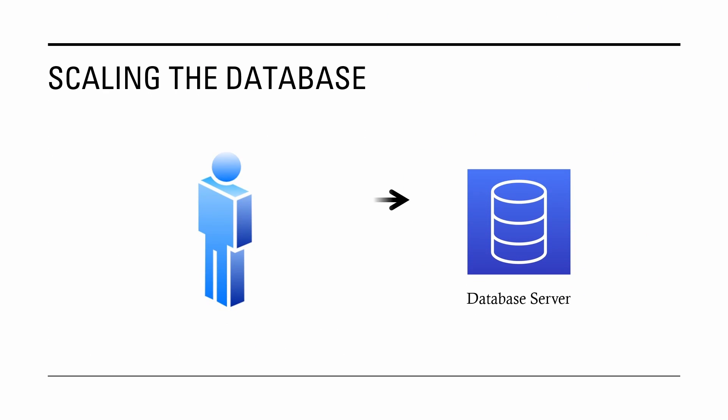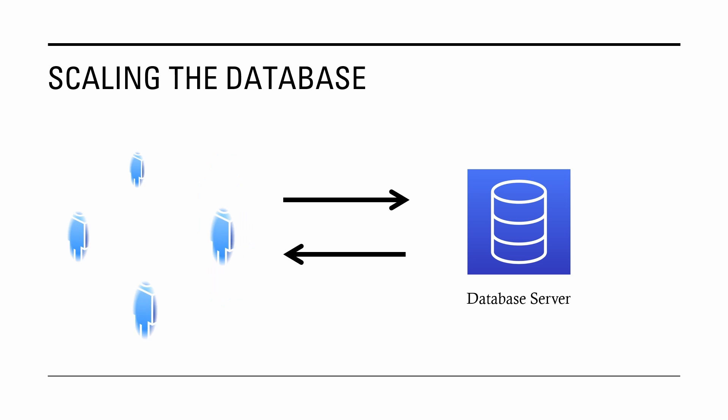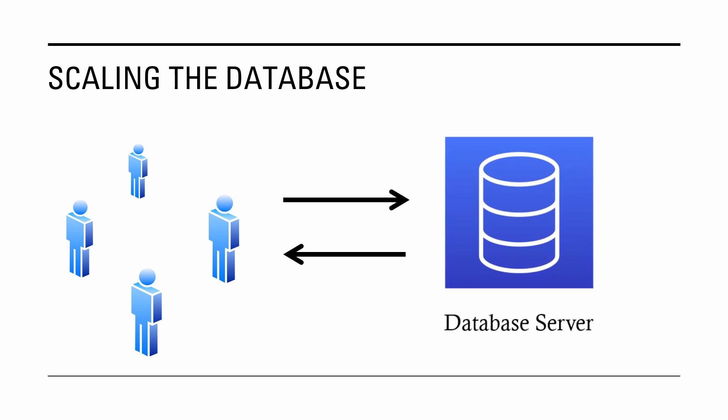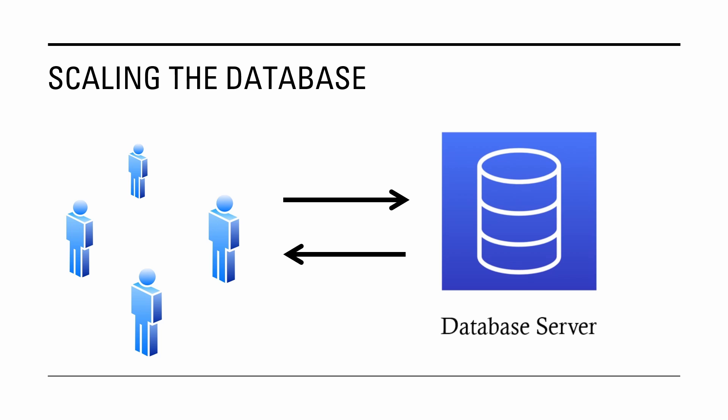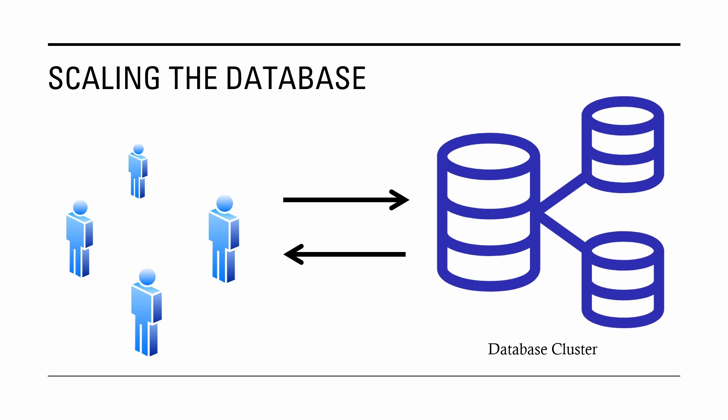At the beginning, Notion used one database server to handle all requests. As the number of users was increasing, Notion's team was applying vertical scaling by increasing the capacity of the virtual server to keep up with the increasing load. Eventually, even the largest available Amazon database instance was not able to handle the constantly increasing load, and Notion's team had to split the single database server into a cluster of servers.